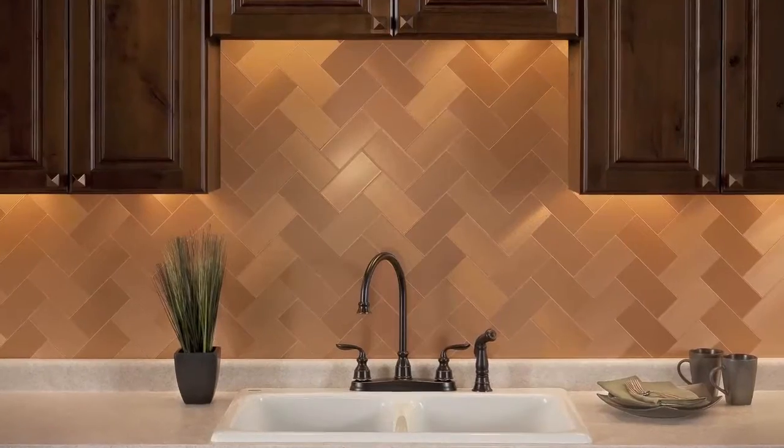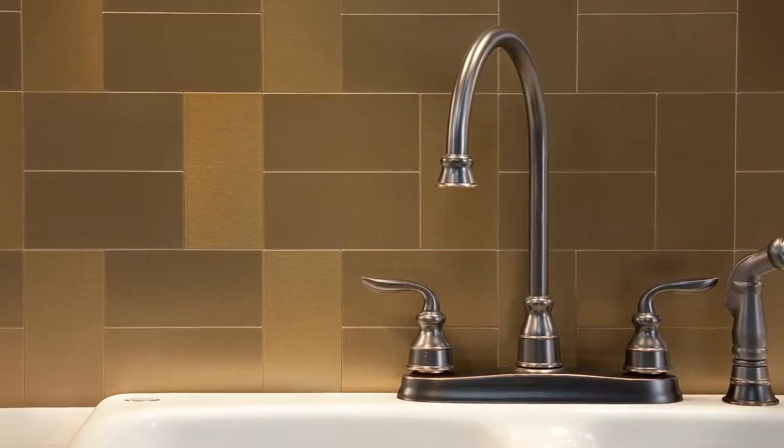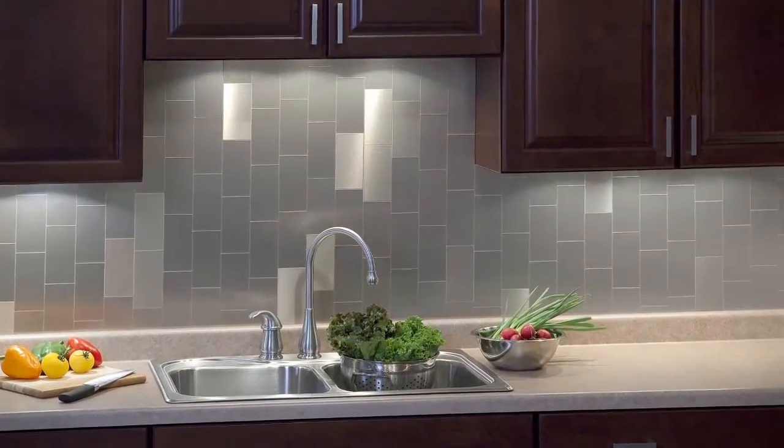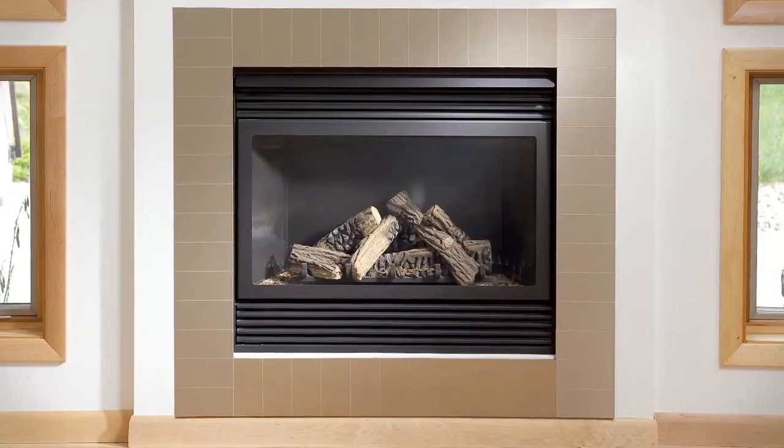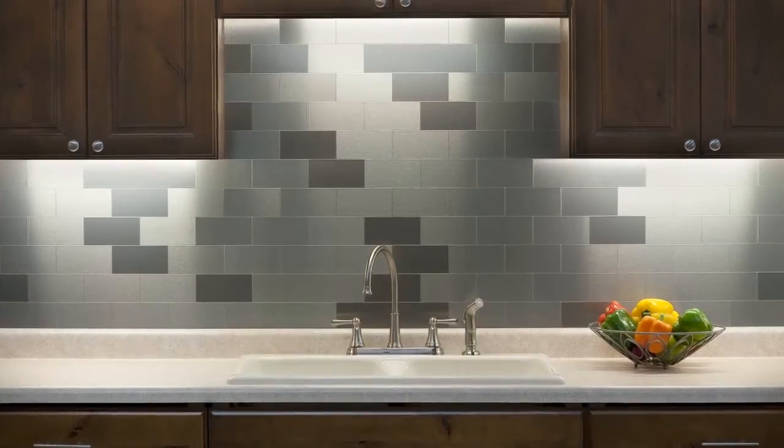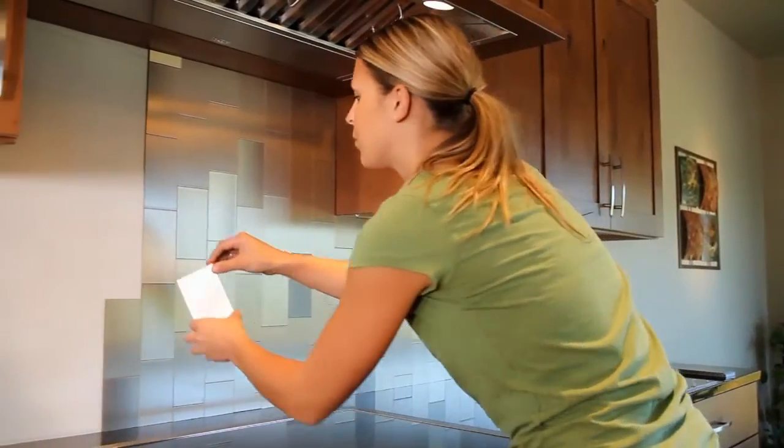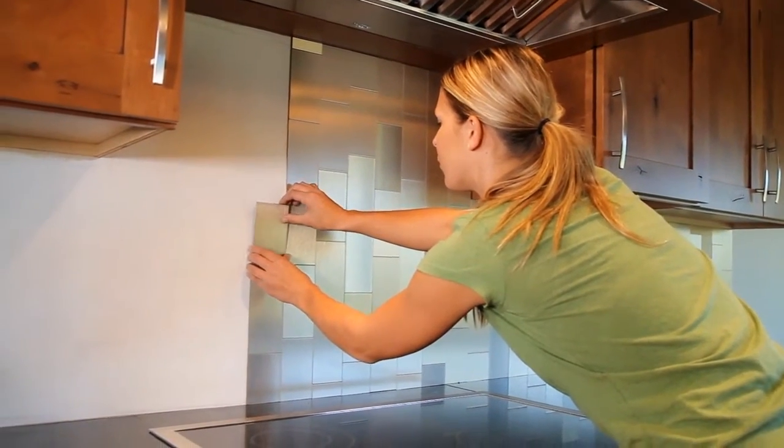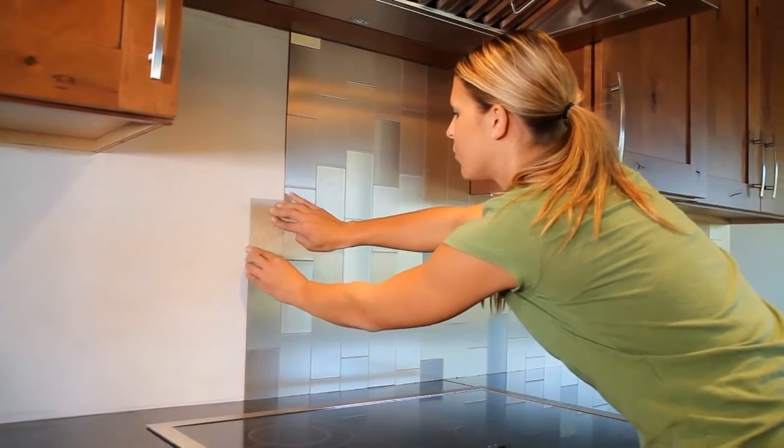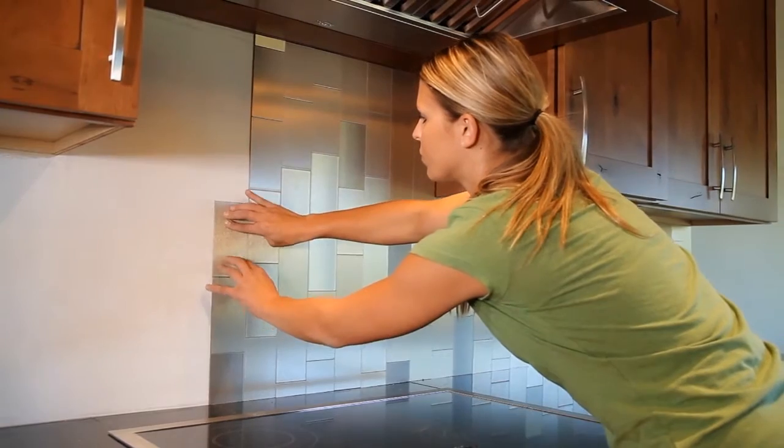The first thing is to decide what pattern you want to use. Here are some popular examples. If you don't find what you're looking for, be creative and design your own pattern. We're going to install a vertical random pattern today using brushed champagne tiles with a mix of both short grain and long grain tiles.